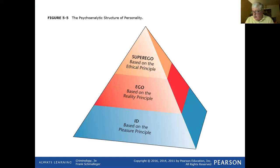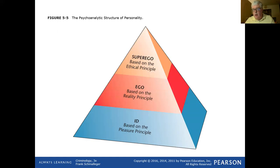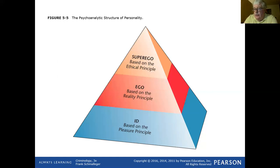Freud said we have three pieces of our personality: the id, the ego, and the superego. The id operates on the pleasure principle — 'I want it, I want it now.' For example, if you're out exercising and you're thirsty, you want that water wherever you can get it, right now. The ego is more practical — it considers how to get what you want and what the practicalities are. Do I buy a bottle of water? Is there a fountain nearby? Am I going to get sick if I drink from the lake?